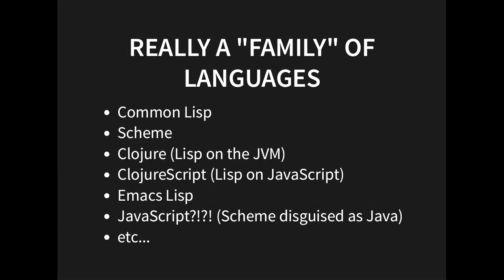Lisp is more like a family of languages. You've got Common Lisp and Scheme. You've got modern Lisps like Clojure and ClojureScript that all run on the JVM and JavaScript. Emacs Lisp, for those people who don't like Vim. And there's even an argument to be made that JavaScript itself is more like a Lisp than Java — but that's another story. Have a look at the history; it's quite interesting.